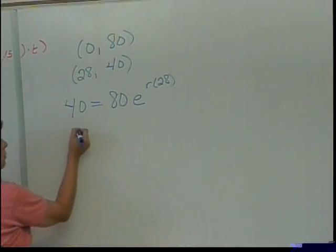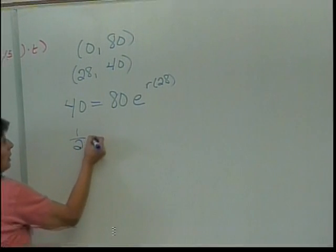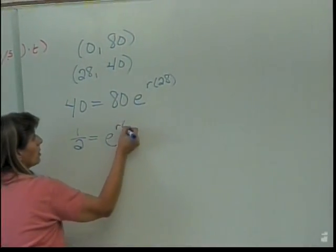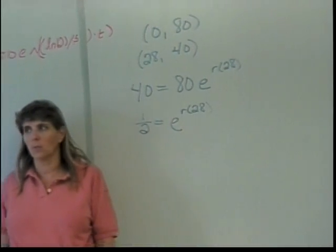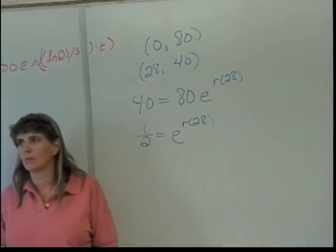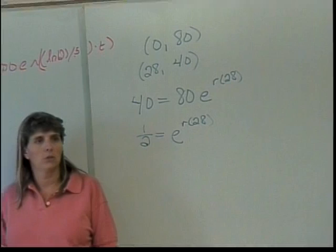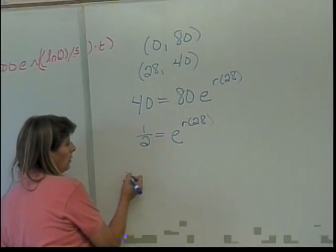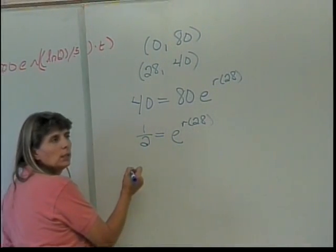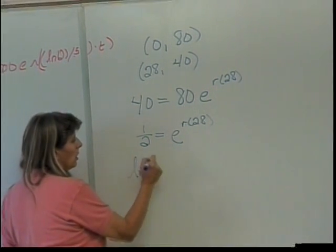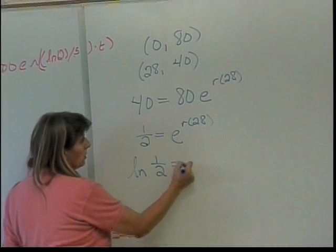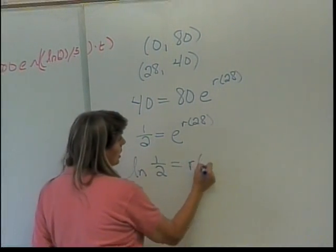Divide both sides by 80. So that will give me one-half equals e to the r times 28. And then the next step in solving this one was? Change form. So the new form will look like? Anybody? Natural log of one-half equals r times 28.